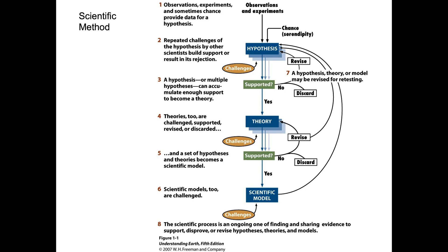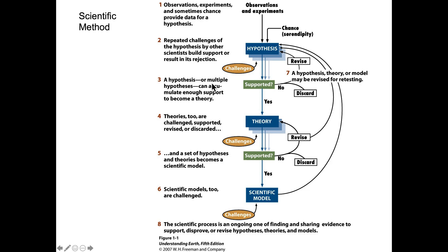Here we have the scientific method laid out. We start with observations and sometimes chance — an accident, serendipity. You happen to be in nature and you see a large block of ice fall into the water — that's an observation. Why did that happen? We come up with a hypothesis: gravity pulled that ice towards the center of the earth, dropping it from a higher elevation to a lower elevation. We then challenge that hypothesis — was it wind, or water, that pushed the ice? We need to test whether gravity pulled that ice down the slope or over the edge.